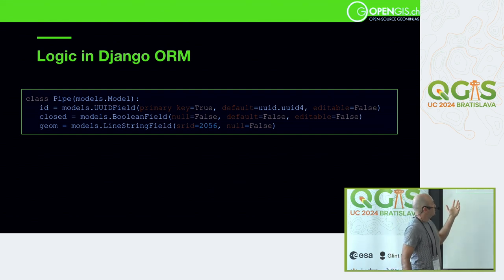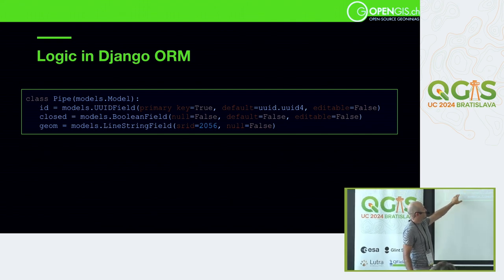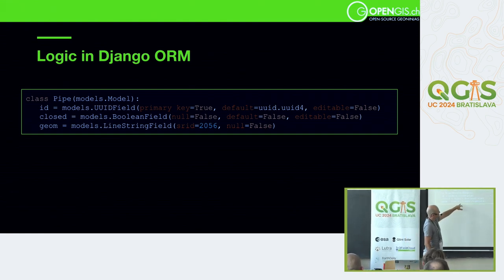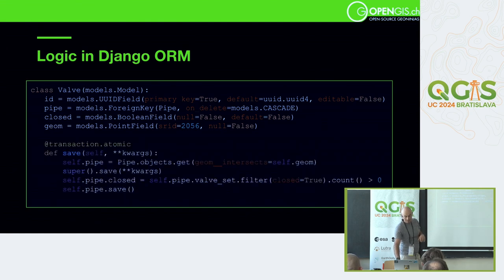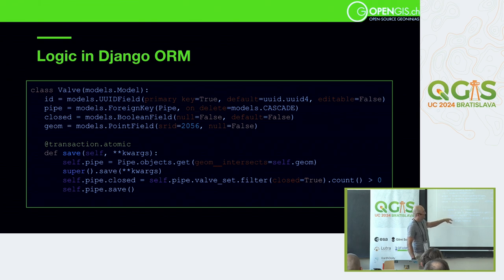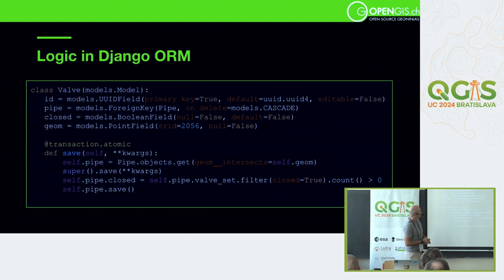So how does that look in Django? It's Python code. I have my Pipe object with attributes: an ID which is a UUID, a closed status which is a boolean, and the geometry which is a LineString with an SRID. The Valve is the same. In the save method, I update the pipe status by counting all valves on it — if any valve is closed, the pipe gets closed.